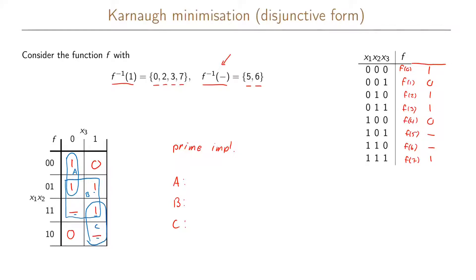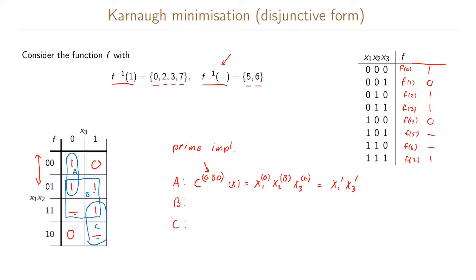Starting with a, this can be written as the cube function c(0,b,0) of x, meaning x1=0, x2=b, x3=0, which we write as x1' · x3'. Why this cube? Looking at rectangular block a, it covers two rows where x1 is always 0 but x2 can be both 0 and 1, giving us the first 0 and the b for x2. And for x3 it only takes the value 0, giving us 0, b, 0.